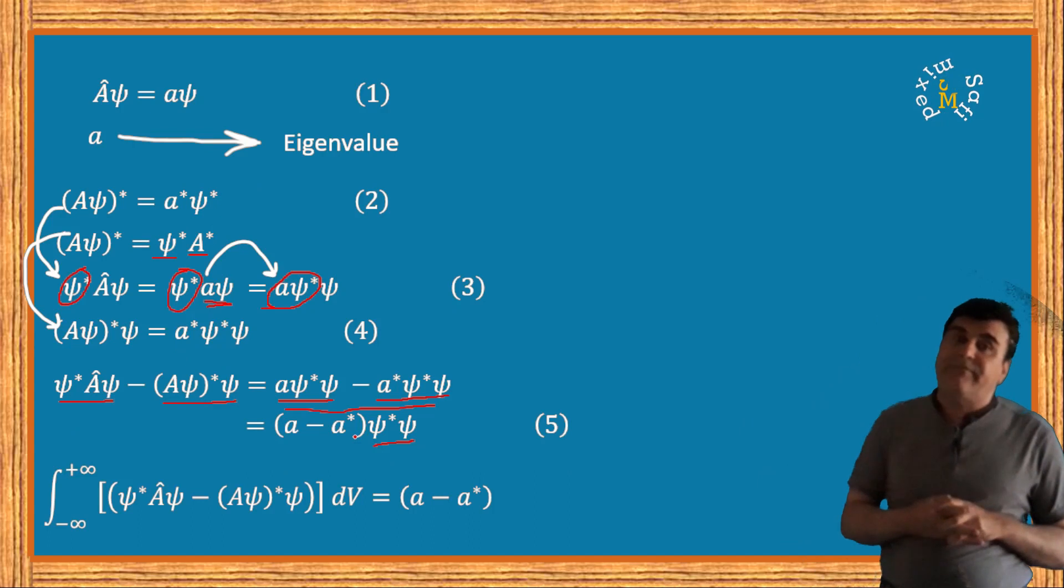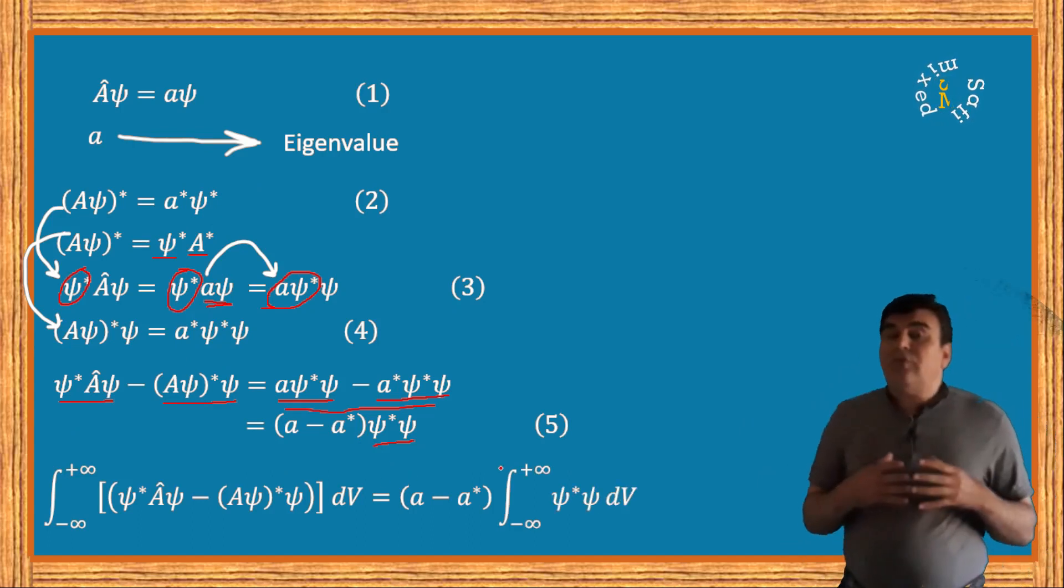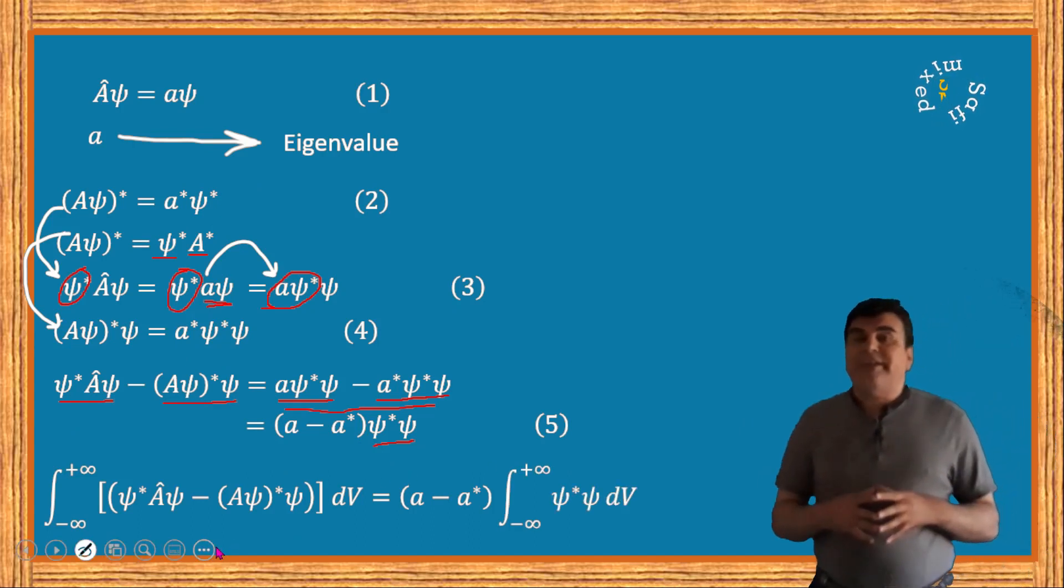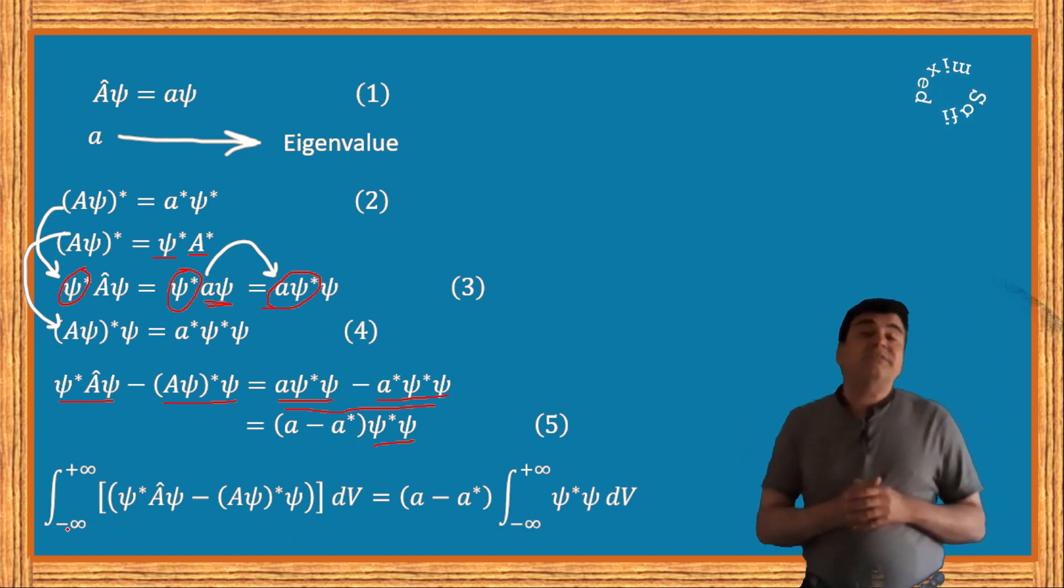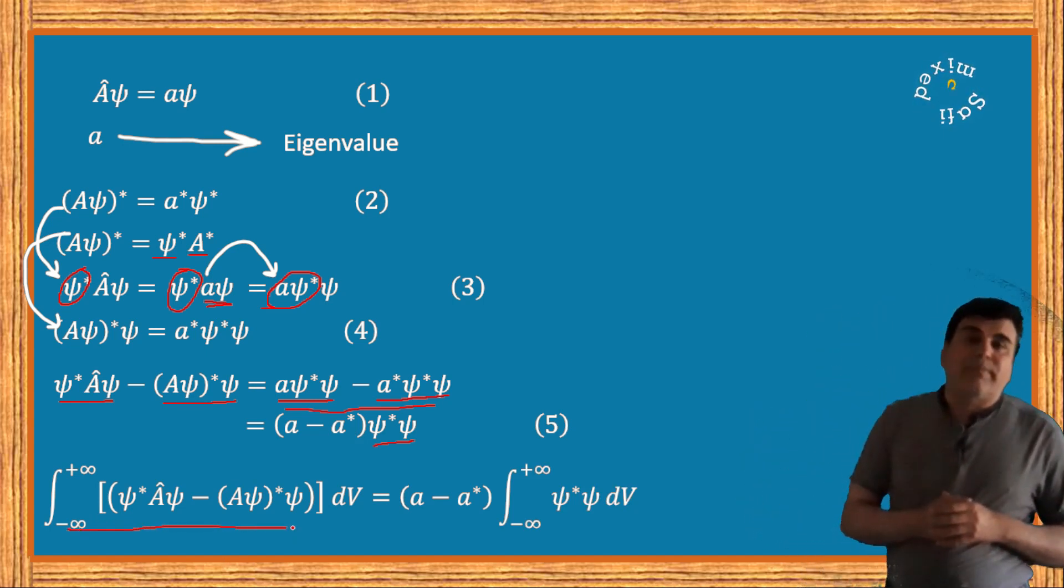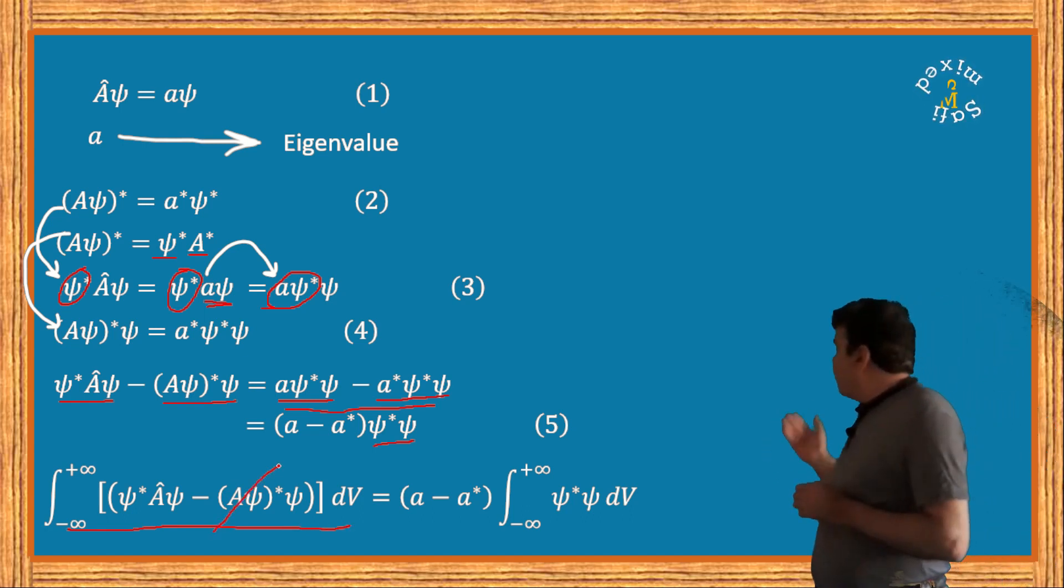According to hermeticity condition of operators, the left side of this equation is zero, which leads us to write the equation into the following form: (a - a*) multiplied with the integral of ψ*ψ over the whole space.